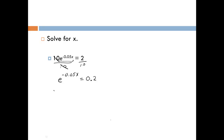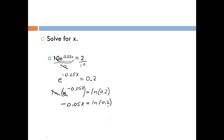Now to get rid of the e, we take the natural log of both sides. So we have the natural log of e to the negative 0.05x power is equal to the natural log of 0.2. On the left side that cancels, so we're left with negative 0.05x is equal to the natural log of 0.2. The last step to get x by itself is to divide both sides by negative 0.05, so x equals the natural log of 0.2 divided by negative 0.05.